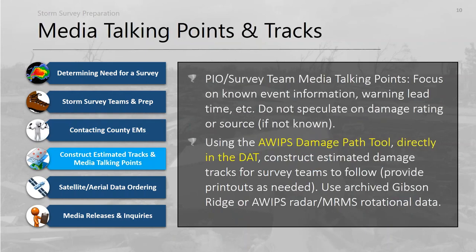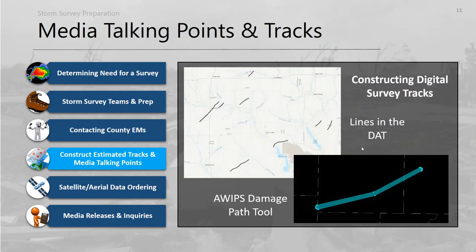The PIO back in the office should be constructing media talking points, and using archived AWIPS or GR data to construct damage paths using the AWIPS damage path tool or directly in the Damage Assessment Toolkit. Provide these digitally and as a printout for survey teams. You can sketch tracks directly in AWIPS using the line tool without publishing to the public server, or use the damage path tool. These tracks will be visible on iPads using the DAT in landscape mode.